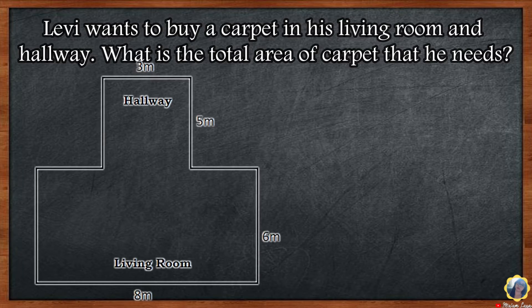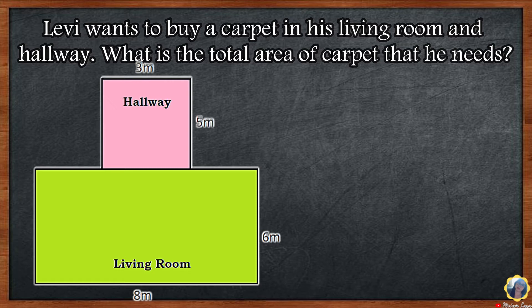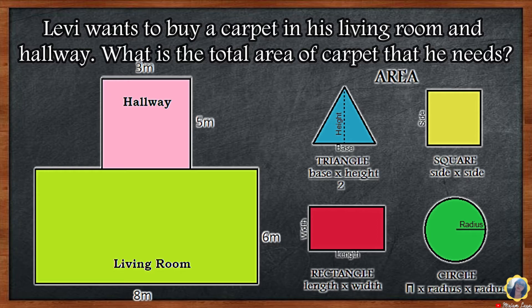I have here a situation: Levy wants to buy a carpet for his living room and hallway. What is the total area of carpet that he needs? Let us analyze and identify the figures. We have two rectangles based on our floor plan. Now let us find the area of the two rectangles. Let us review first the area formula. The formula to find the area of a rectangle is length times width. Remember, length pertains to the longest side of the rectangle while width is the shorter side.